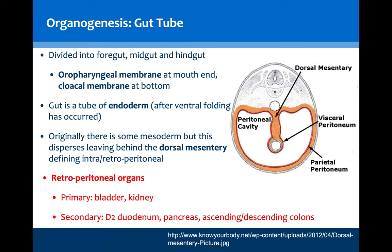The GI tract can be divided into the foregut, the midgut and the hindgut, starting at the oropharyngeal membrane at the mouth and finishing in the cloacal membrane at the anus. This gut is a tube of endoderm that forms from the ventral layer of the trilaminar disc following folding. Originally it is surrounded by a layer of mesoderm but this disperses, leaving behind the dorsal mesentery, which plays a key role in transporting vessels to and from the organs and allows the organs to be suspended in the abdominal cavity.